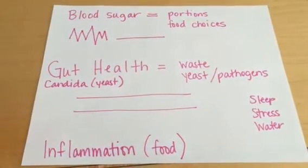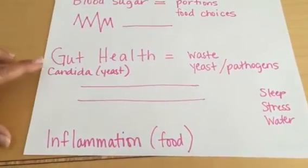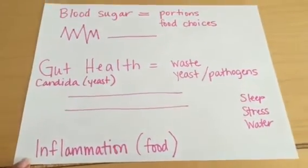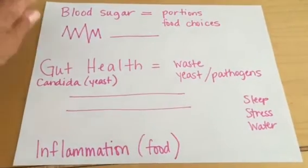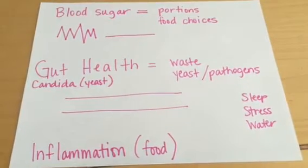There are three root health issues that are impacting us today: blood sugar, gut health, and inflammation. Most people don't realize that these three root health issues are what are impairing our society for a healthy weight.